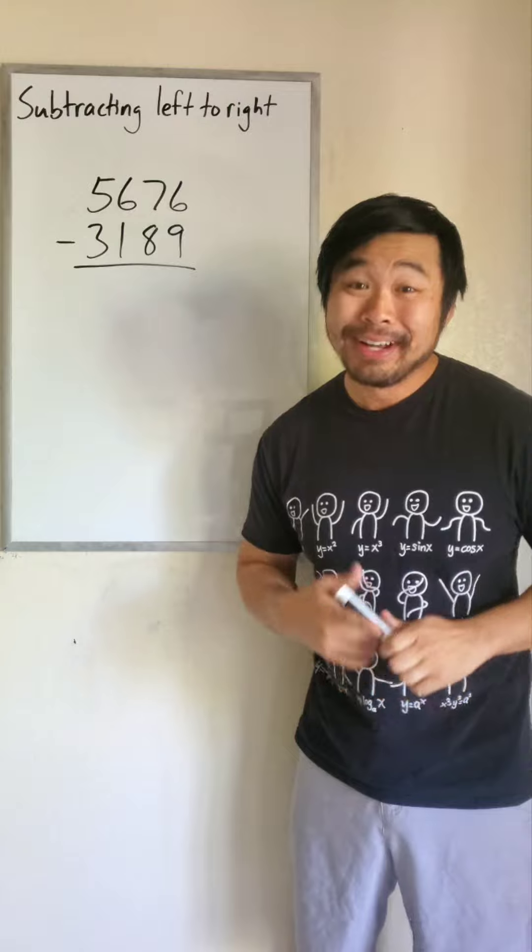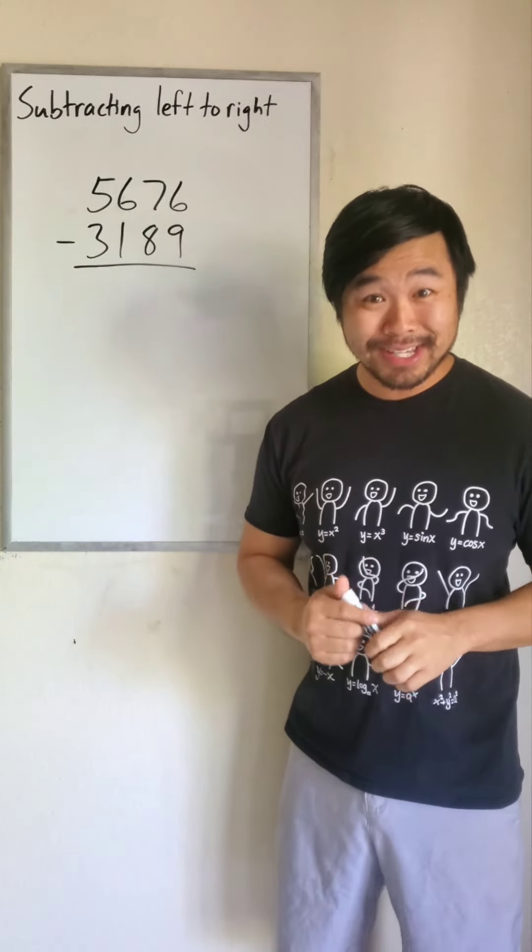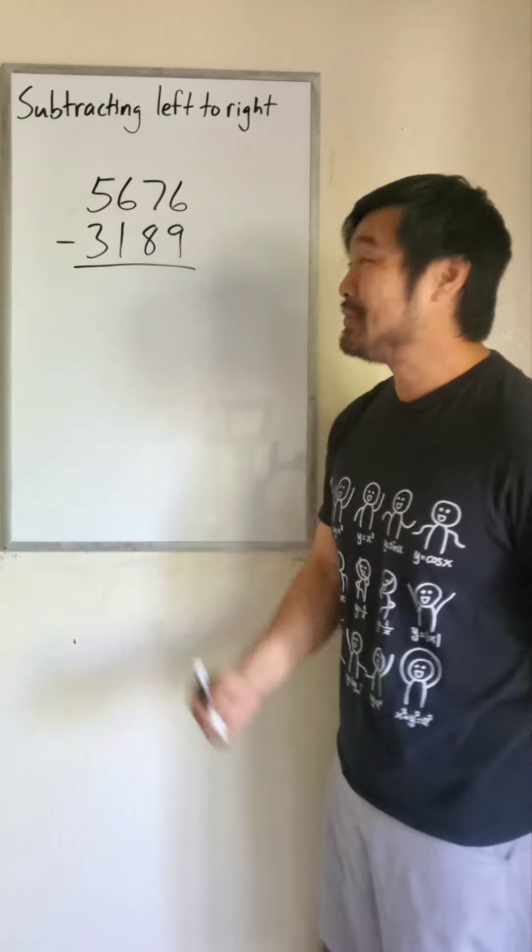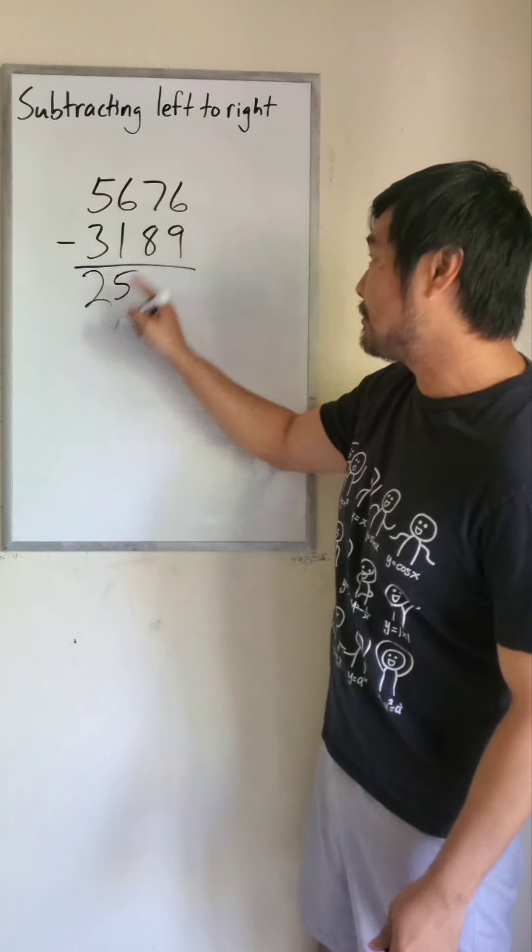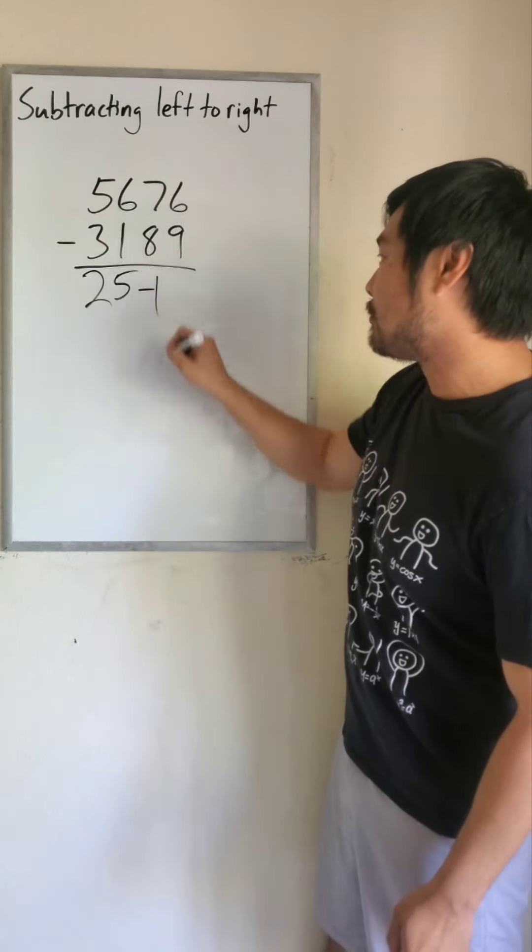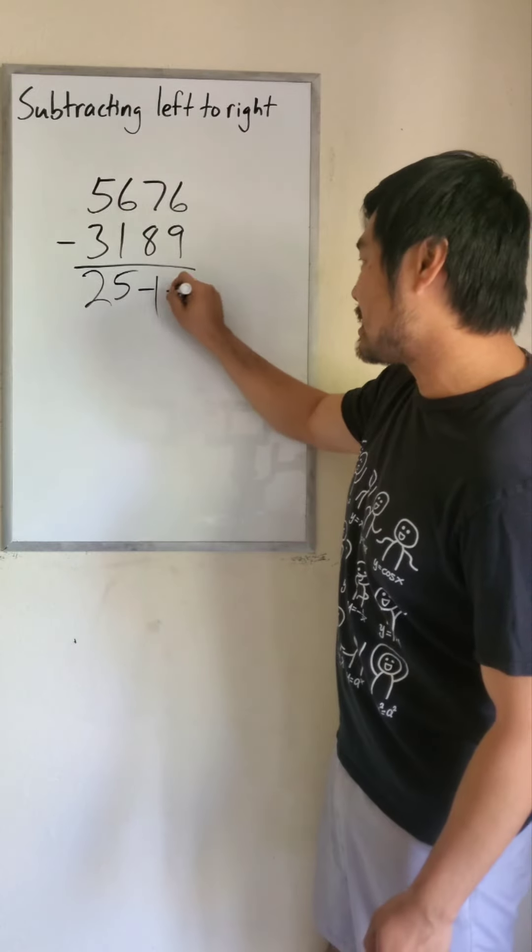Now let's do another one. Let's do 5,676 minus 3,189. 5 minus 3 is 2, 6 minus 1 is 5, 7 minus 8 is negative 1, and 6 minus 9 is negative 3.